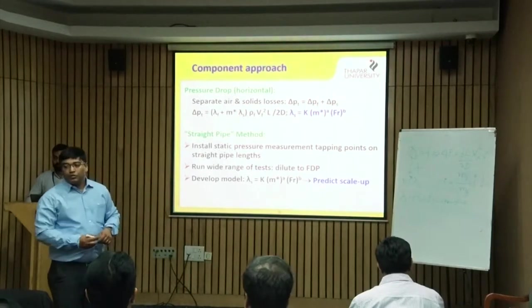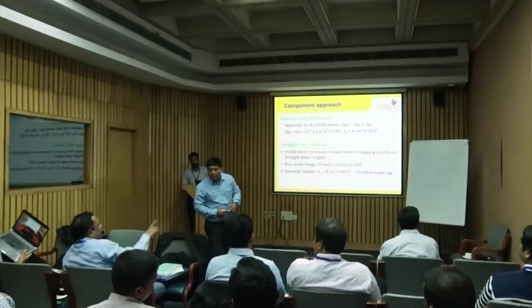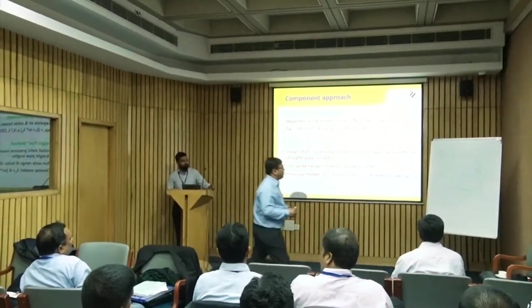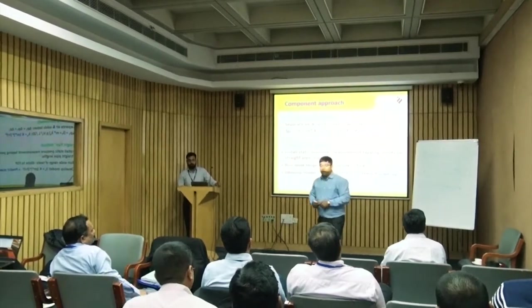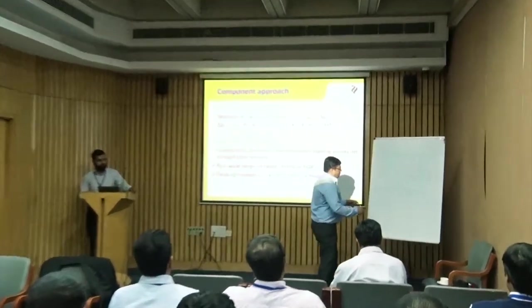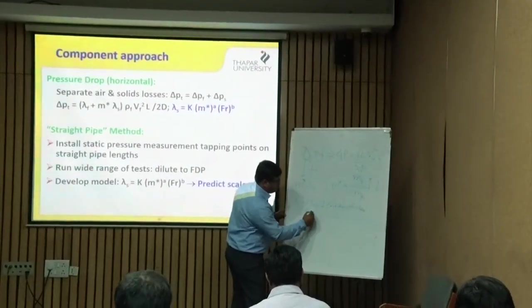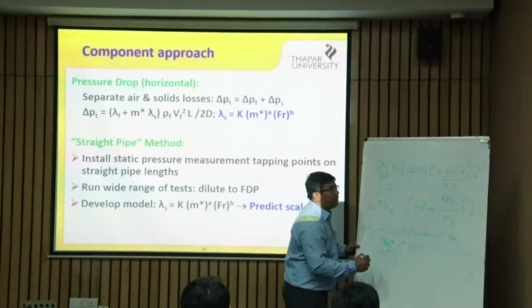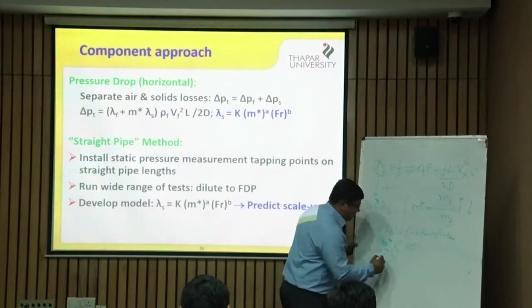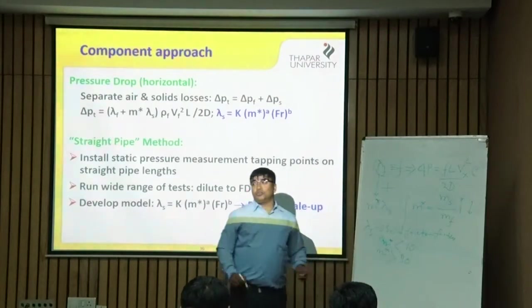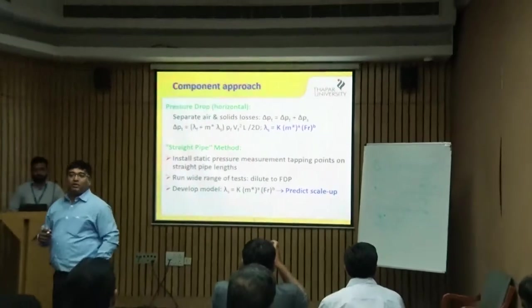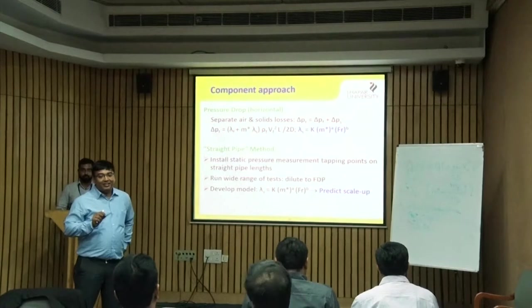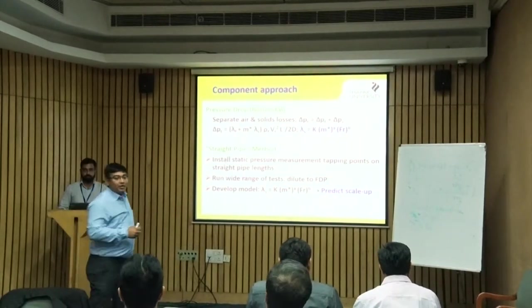Regarding critical values of m*: there is no single universal number, but roughly speaking, if m* is less than about 10, it is most likely dilute phase; if it is above around 30, it is most likely dense phase. In between, we can't be certain. Please note this with a caveat — it depends on the product. Don't treat it as an absolute statement.